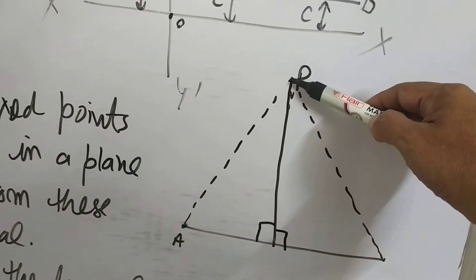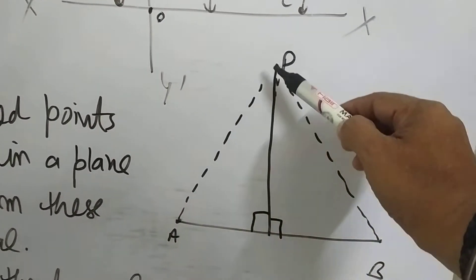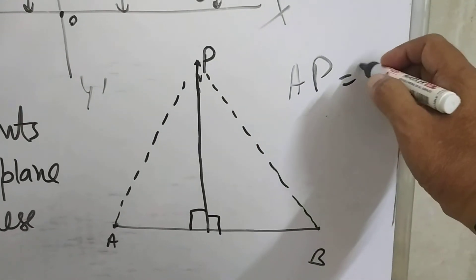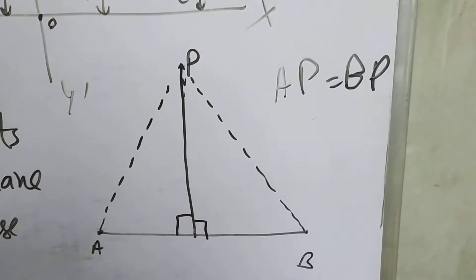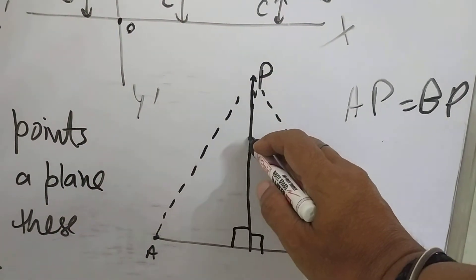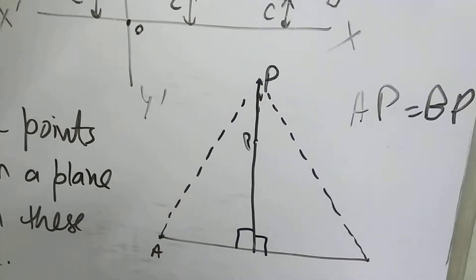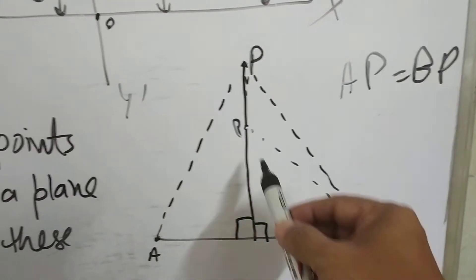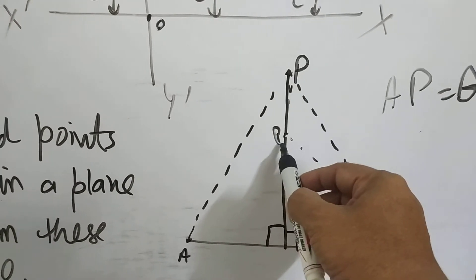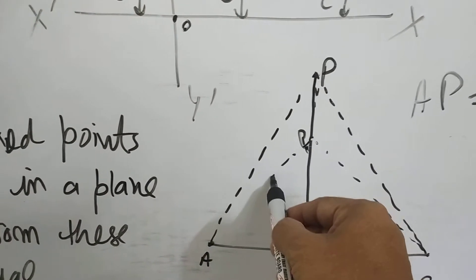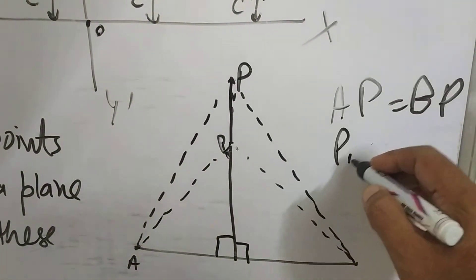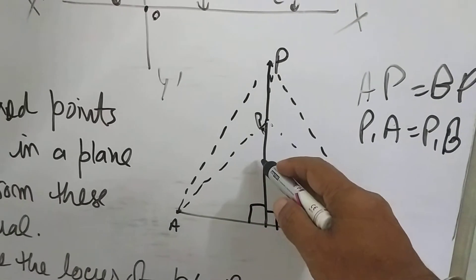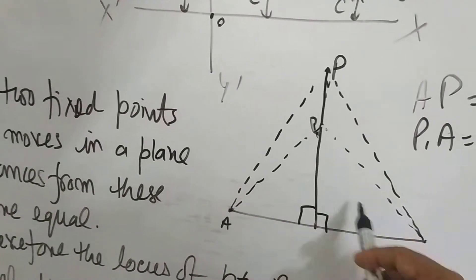Suppose at this time point P is here, so distances AP and BP are equal. Suppose point P moves to another position P1; then distance P1A equals P1B. Likewise, when P is at position P2, then P2A and P2B will also be the same.